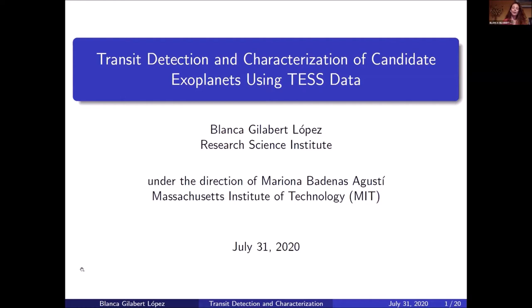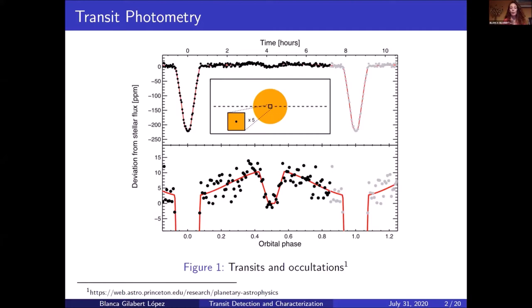One of the most effective detection techniques is transit photometry. Photometry is the measurement of the brightness from a human perception. Then transit photometry tries to detect slight variations in the brightness of a star due to a transit. Here in this graphic you can see the y-axis is the stellar flux, so the brightness of the star. And in the x-axis you can see the time, the orbital phase.